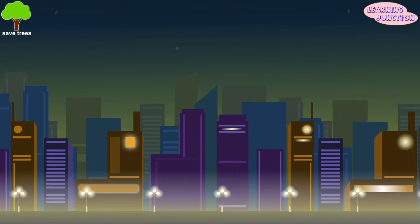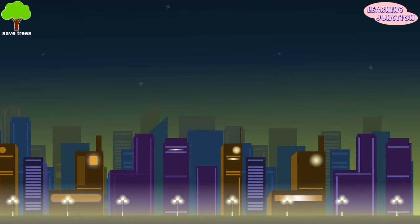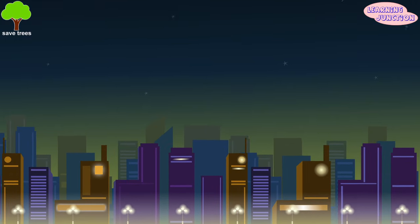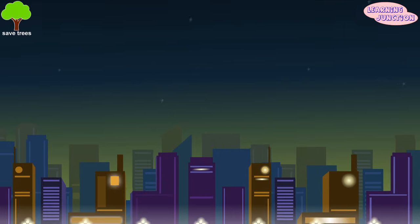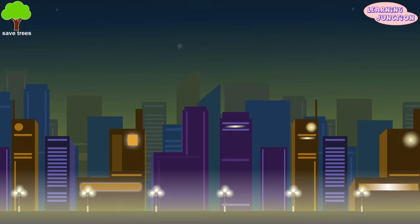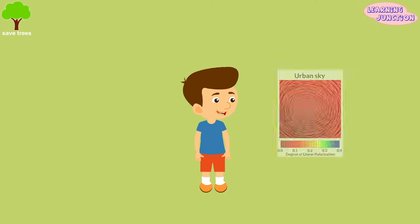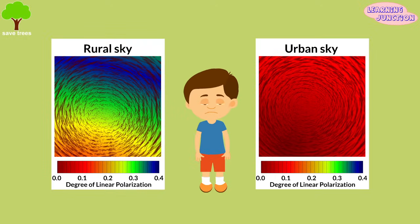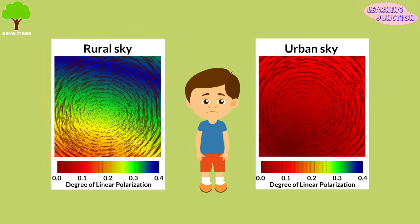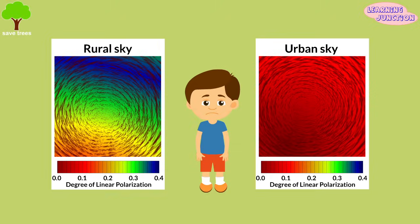We need light at night, but the fact is that too much outdoor lighting used at night is inefficient and completely unnecessary. This light and the electricity used to create it is being wasted by spilling it into the sky, rather than focusing it onto the actual objects and areas that people want illuminated.